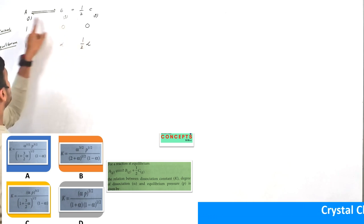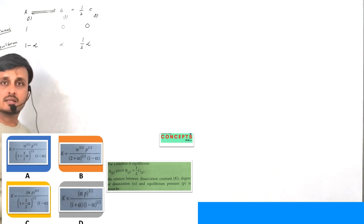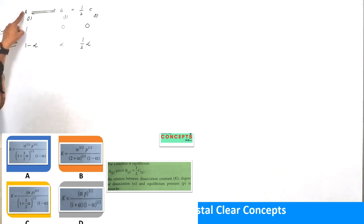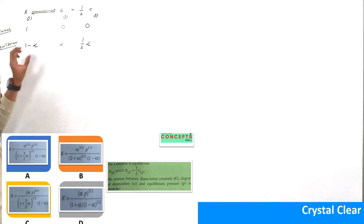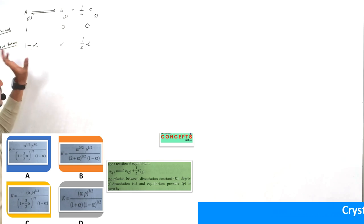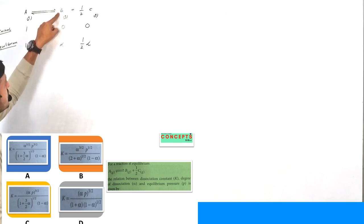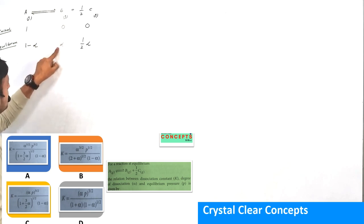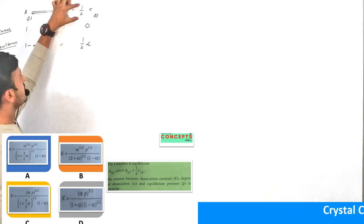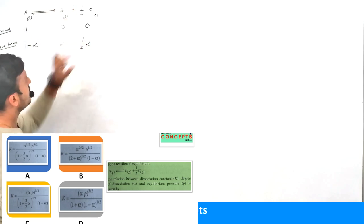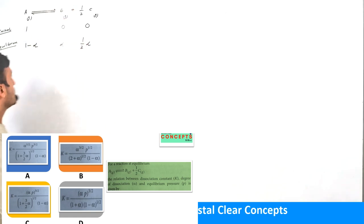We need to apply the stoichiometric coefficients. If the stoichiometric coefficient is 1, then A will have a (1 - α) portion. If the stoichiometric coefficient is 1, B will have an α portion, and if the stoichiometric coefficient is half, C will have a half-alpha portion.